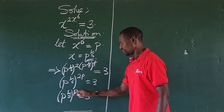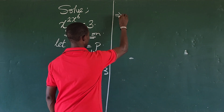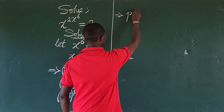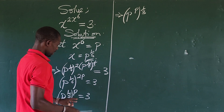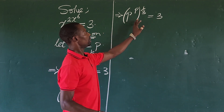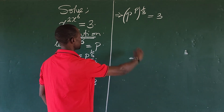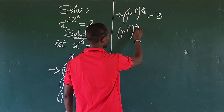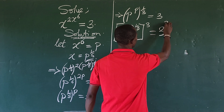We can use p to open this power further. This gives us p raised to the power of p, all raised to one over three, equals three. To eliminate that one over three, we take the cube of both sides. So: p to the power of p, in brackets, all raised to one over three, all raised to the power of three, equals three to the power of three.